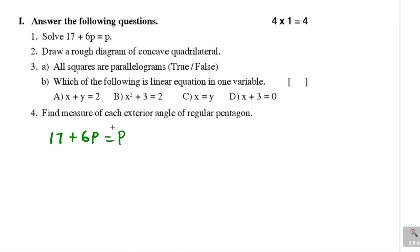Whenever we are solving a linear equation, we need to bring all the terms involving the variable to the left side, and all the constant terms to the right side. Here p is the variable. We have p in two terms: in 6p and in p. So we send 17 to the right side, making it negative 17.